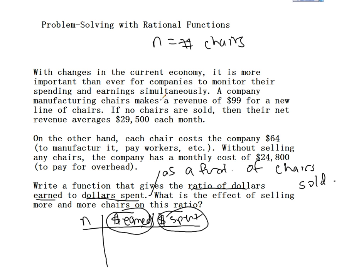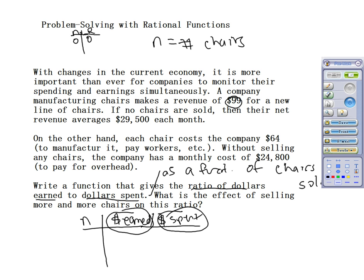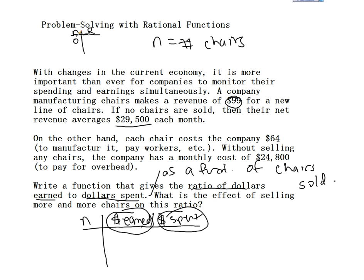The company makes a revenue of $99 per chair for this new line. So for every chair: if I sell one, I get $99. I'm going to call this the revenue function. If I sell zero chairs, I don't get any money from chairs — but I still have a monthly revenue of $29,500. If I sell 10 chairs, I'll still make that average revenue of $29,500, and I can add to that $99 times 10, because I made $99 for each chair.